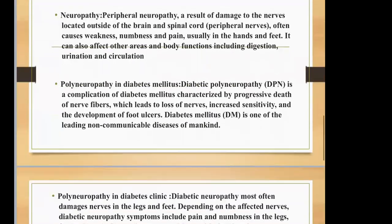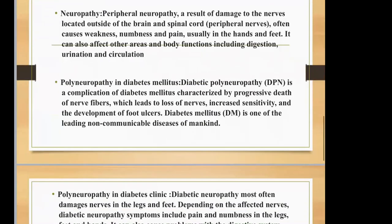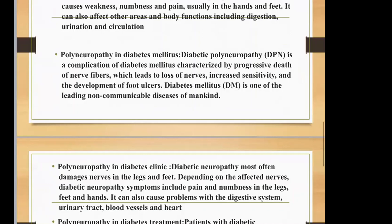Polyneuropathy in diabetes mellitus is a complication characterized by progressive death of nerve fibers, which leads to loss of nerve function, increased sensitivity, and the development of foot ulcers. Diabetes mellitus is one of the leading non-communicable diseases of mankind.